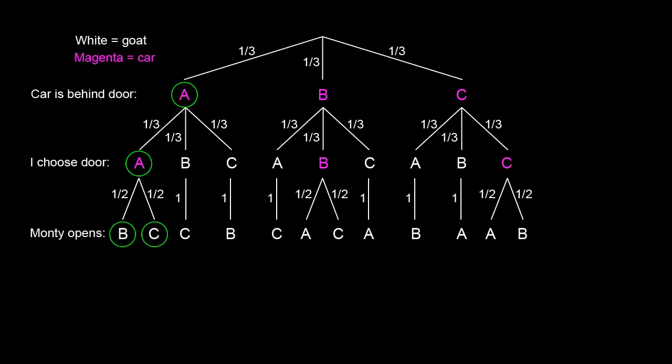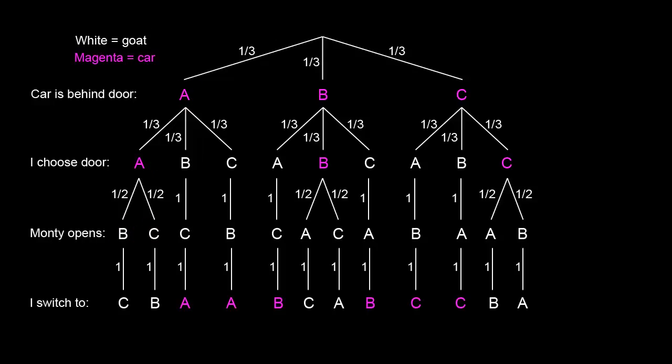The final step is I'm going to switch to the door that Monty didn't show me. All of these switches have a probability of one, because I decided in advance that my strategy was to always switch. An example of a switch is the car is behind door A. I choose door A. Monty shows me door B, and I switch to C, the door that Monty didn't show me. Unfortunately, I switch from the car to the goat in this case.